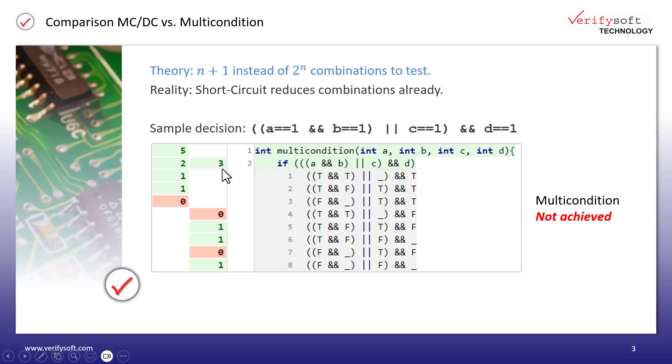In front of the truth table, we see how these five tests are distributed across the individual combinations. The first three combinations lead to true for the overall result. The combinations 4 to 8 return false for the overall decision.